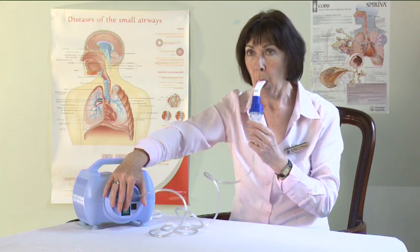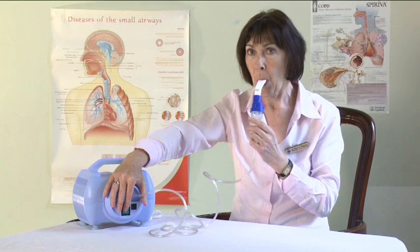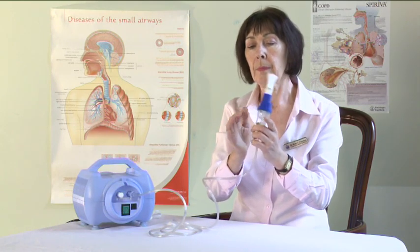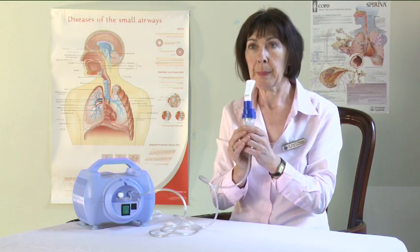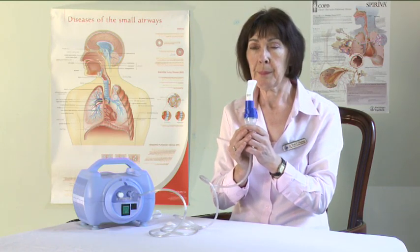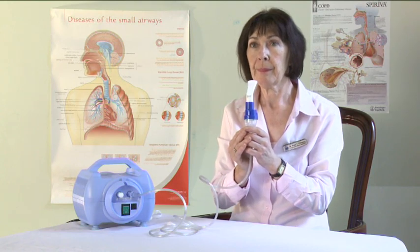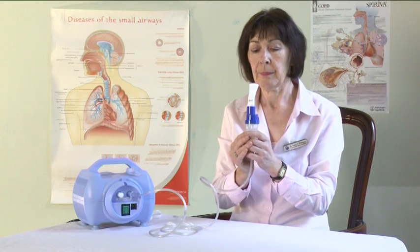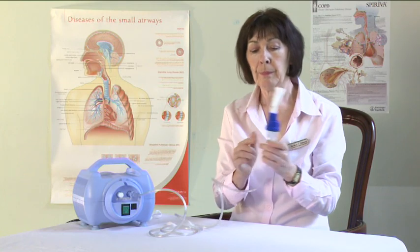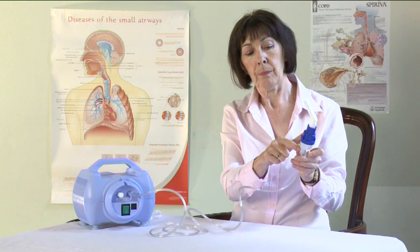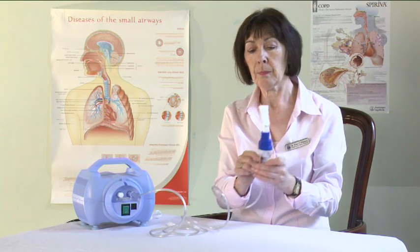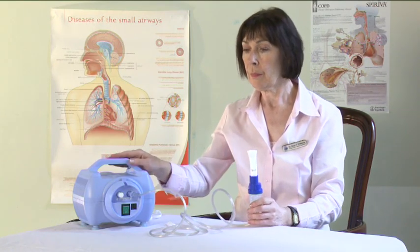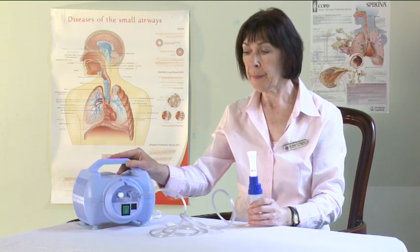When you use a nebuliser, occasionally tap the side of it to help medication drop to where it can be misted. Continue until the medicine is gone from the nebulising chamber. The nebuliser will most likely begin spluttering when it is empty. A tiny drop of nebuliser solution is always left at the bottom of the nebulising chamber after use. When using the compressor, put it on a clean, hard surface such as a table. Always keep the compressor off the floor to prevent dust getting inside.